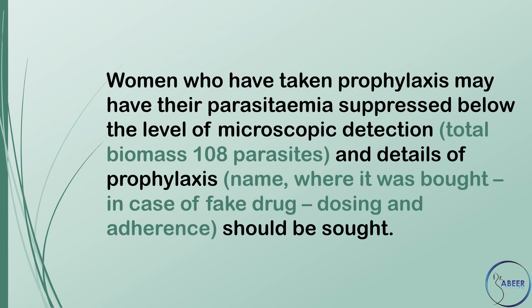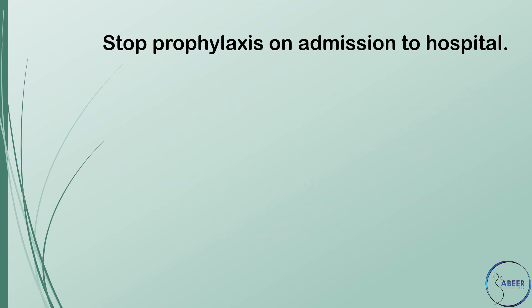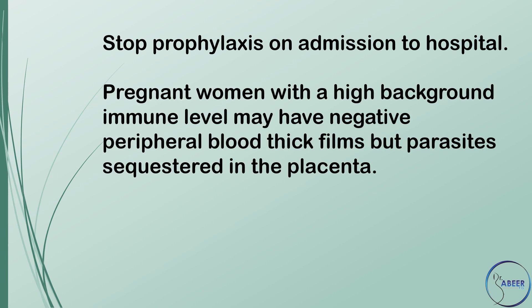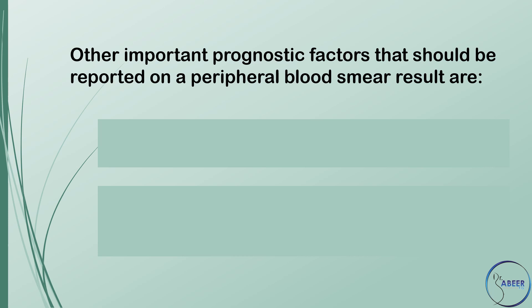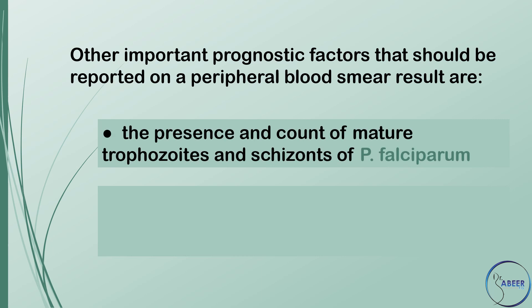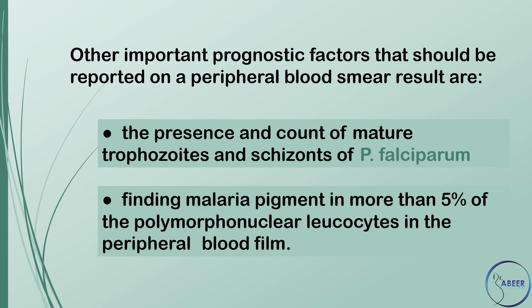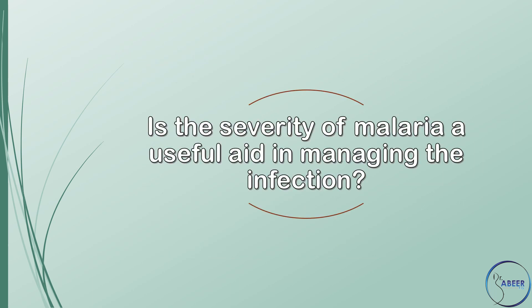Women who have taken prophylaxis may have their parasitemia suppressed below the level of microscopic detection. Details of prophylaxis — name, where it was obtained (in case of counterfeit drug), dosing, and adherence — should be sought. Stop prophylaxis on admission to hospital. Pregnant women with a high background immune level may have negative peripheral blood thick films but parasites sequestered in the placenta — for example, a recently arrived woman from a high malaria-endemic country with unexplained anemia. Other important prognostic factors that should be reported on a peripheral blood smear result are the presence and count of mature trophozoites and schizonts of Plasmodium falciparum, and finding malaria pigment in more than 5% of the polymorphonuclear leukocytes in the peripheral blood film.